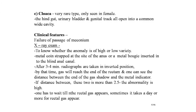The next high-level anomaly is cloaca, a very rare type seen only in females. In this condition the hindgut, urinary bladder, and genital tract all open into a common wide cavity. Clinical features include failure of passage of meconium. To determine whether the anomaly is high or low level, a metal coin is taped on the side of the anus or a metal bougie is inserted into the blind anal canal. After three to four minutes, a radiograph is taken in the inverted position so that gas reaches the end of the rectum. If the distance between the gas shadow and the metal indicator is more than 2.5 cm, the anomaly is high level.